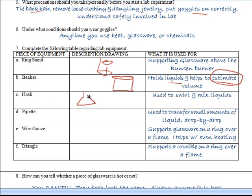Flask. Remember, it kind of looks like this. And this is great because the liquids in here can be swirled around without popping out of the top. You try to swirl stuff in a beaker, and it's probably going to splash all over. Pipettes. We use pipettes quite often, and they're used to transfer small amounts of liquid drop by drop.